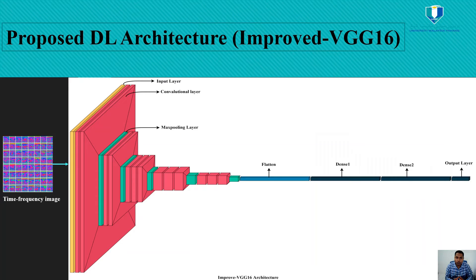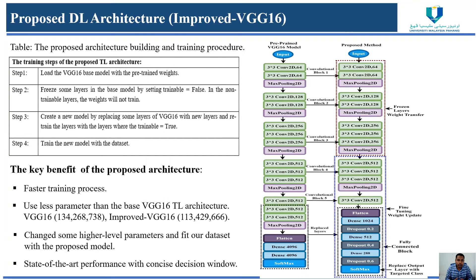This figure shows the architecture of the proposed improved VGG-16 model. It consists of an input layer, multiple convolution layers, max pooling layer, multiple dense layers, and a fully connected layer. This table illustrates the proposed architecture building and training procedure. In the first step, we load the base VGG-16 model with pre-trained weights. In the second step, we freeze some layers of the base VGG-16 model. The red dotted area in the figure shows the working of step 2.